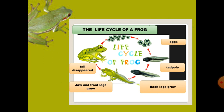Now here are a few life cycles from your reading book. First is the life cycle of a frog — how a frog makes copies of itself. There are five stages: first, frogs lay eggs; second, a tadpole comes out from the egg; third, back legs grow; fourth, jaw and front legs grow; then the tail disappears, and finally there is an adult frog.